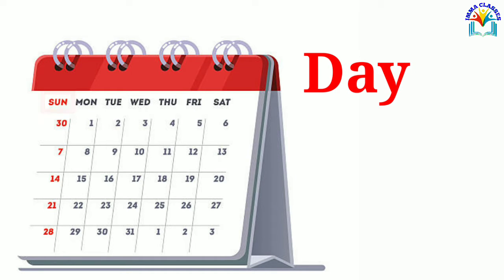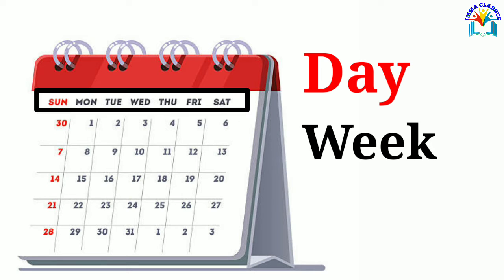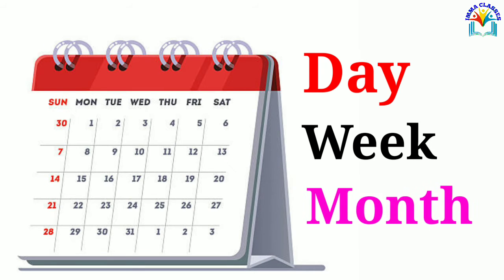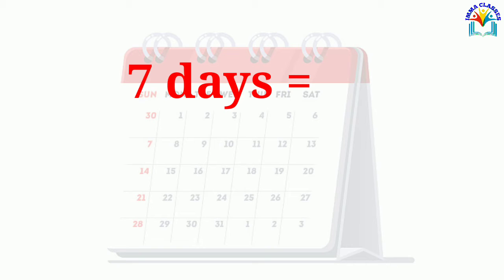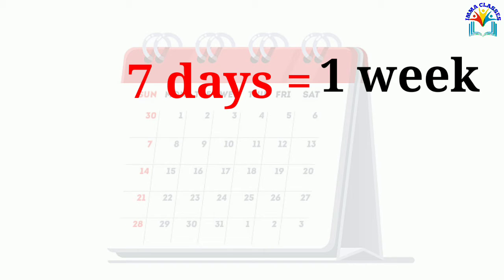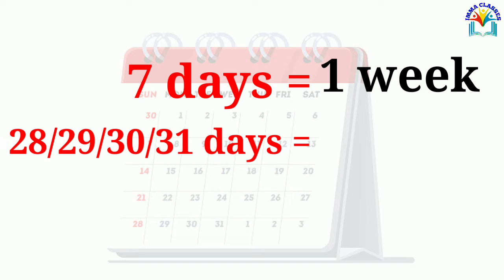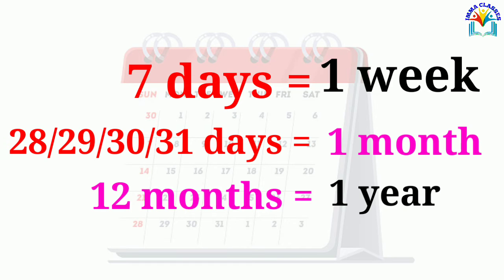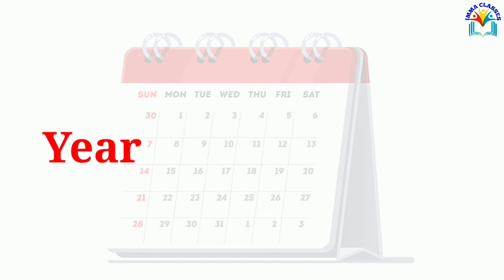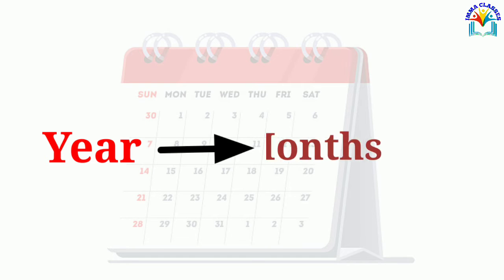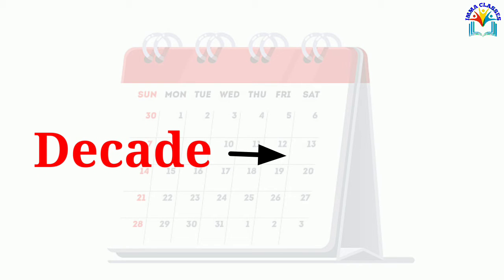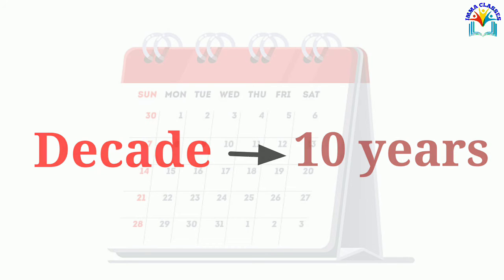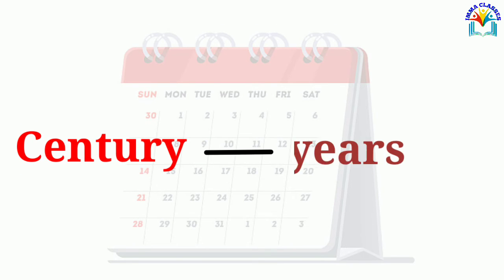Day. Week. Month. 7 days make 1 week. 28 or 29 or 30 or 31 days make 1 month. 12 months make 1 year. A year has 12 months. Decade means 10 years. Century means 100 years.